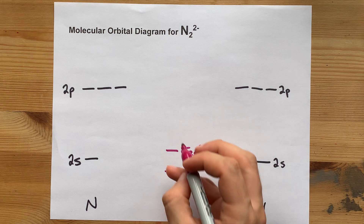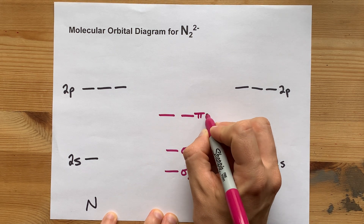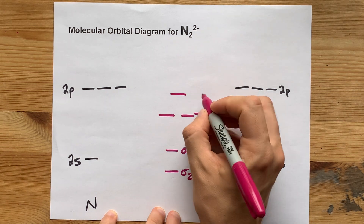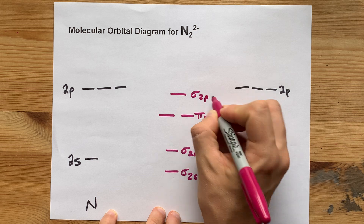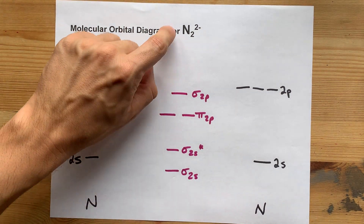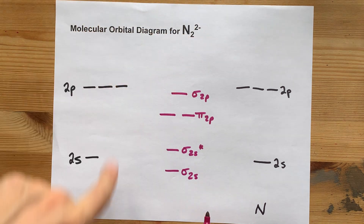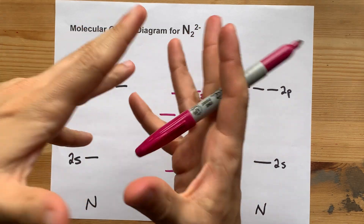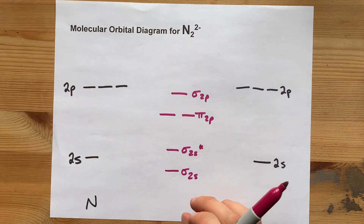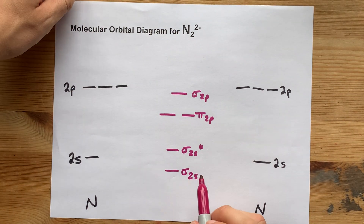When the 2p orbitals overlap, this is where it gets just a tiny bit tricky. The lowest energy molecular orbitals formed are two pi-2p bonding orbitals, and then next highest is a sigma-2p bonding orbital. These two are actually switched if this had been O2, F2, or neon-2. Once you get to oxygen, the effective nuclear charge affects the pull on each of these molecular orbitals, but this is nitrogen, so this is the order for it.